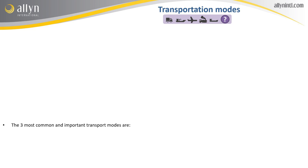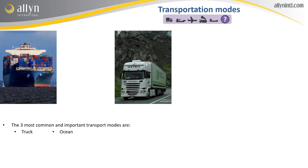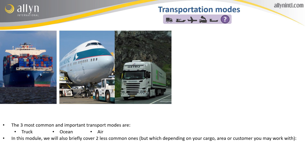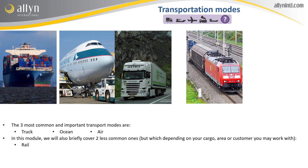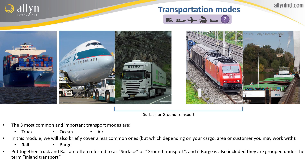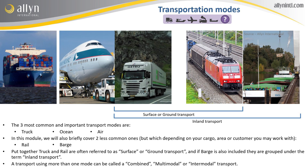The three most common and important transport modes you will most likely work with are truck transport, ocean transport, and air transport. Depending on the cargo, area, and customer you work with, you may also work with two less common ones covered in this module: rail transport and barge transport. Together, truck and rail transport are often referred to as surface or ground transport, and if barge is also included, they are grouped under the term inland transport. A transport using more than one mode can be called a combined, multimodal, or intermodal transport.